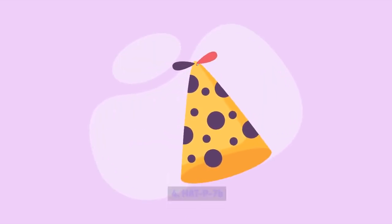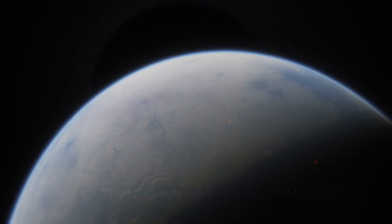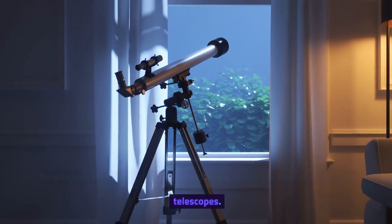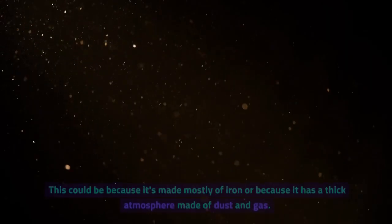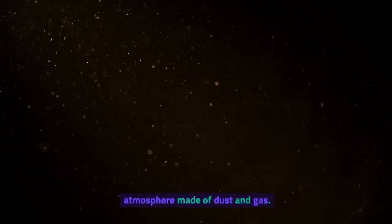HAT P7b. This exoplanet is thought to be the darkest known exoplanet in our universe. It reflects less than 1% of the light that hits it, making it almost invisible to telescopes. This could be because it's made mostly of iron or because it has a thick atmosphere made of dust and gas.